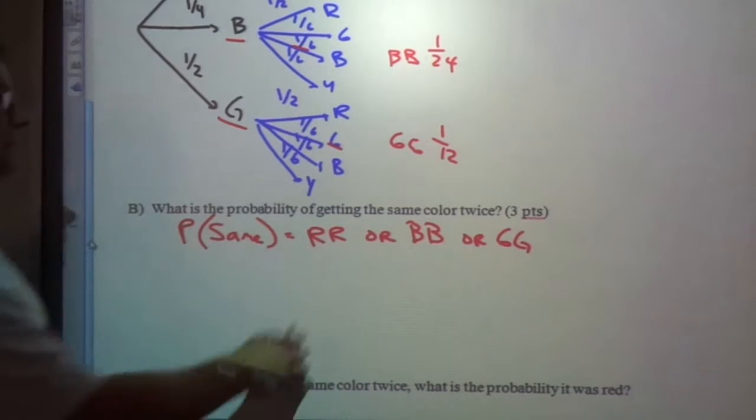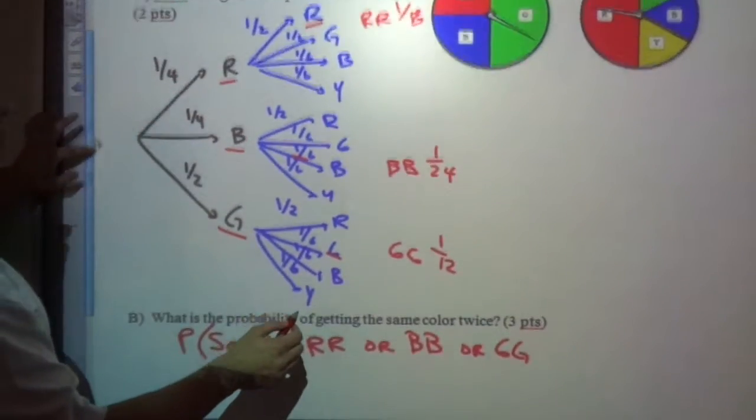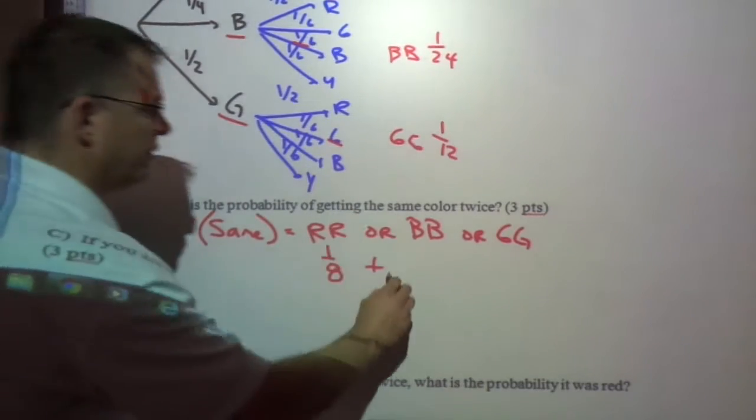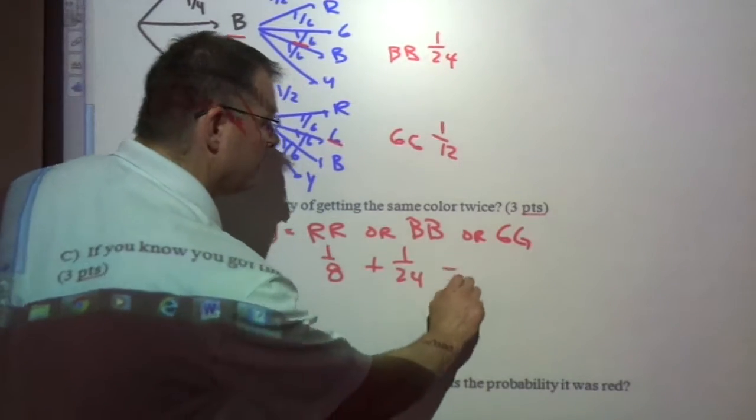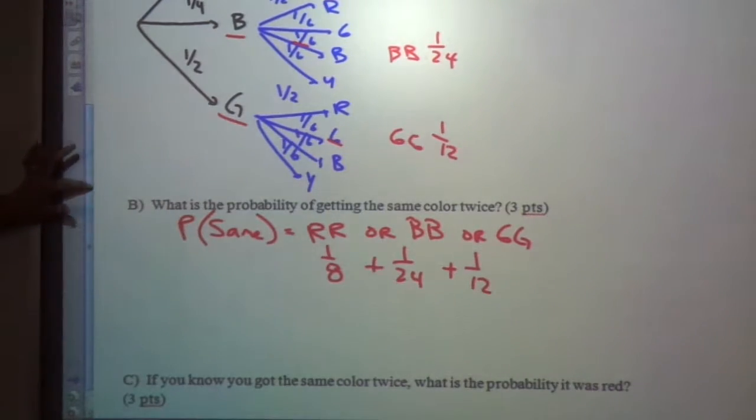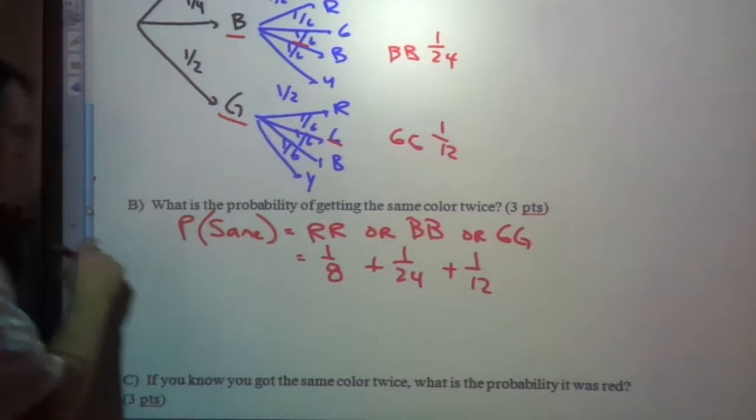And what do you have to do with numbers, with probabilities, when it's or? Add. So the red, red was, we said, was one-eighth, plus the blue, blue, which is one-twenty-fourth, plus the green, green, which is one-twelfth, right?